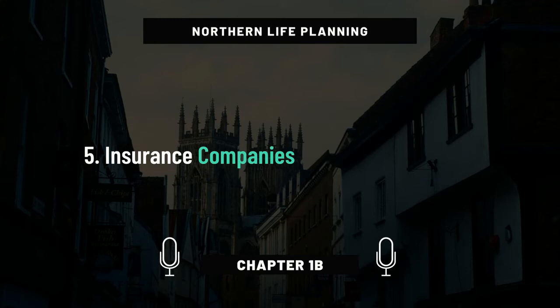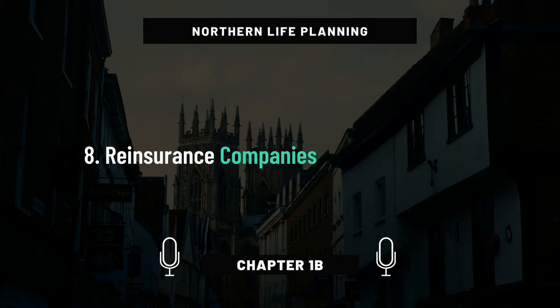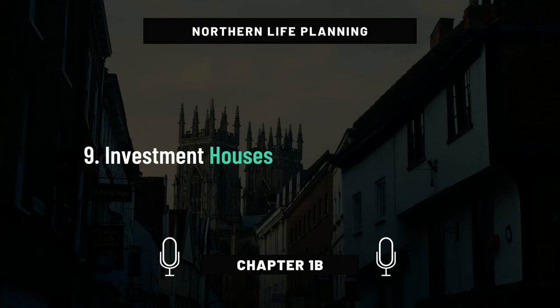Number six is investment companies — these are places where you can invest your surplus for long-term gain. Number seven is life assurance and pension companies. These entities invest their assets to meet long-term policyholder obligations. So you could have a pension with a company and they are obligated to invest it for you in the markets and make the funds available to you when you reach retirement age, or pay you out on death in the case of life assurance companies. Number eight is reinsurance — essentially insurance for insurance companies. And number nine, last one, investment houses. These are pooled investments like unit trusts and open-ended investment companies, Vanguard being an example. All these institutions are in one way or another part of the UK financial services industry.